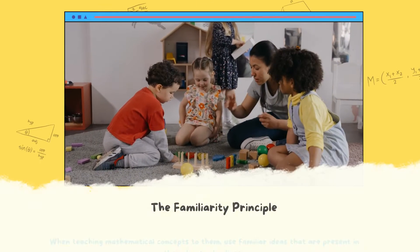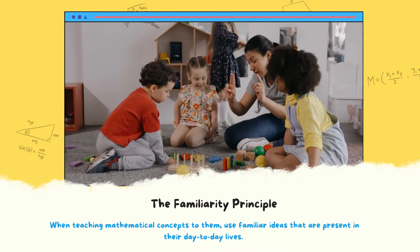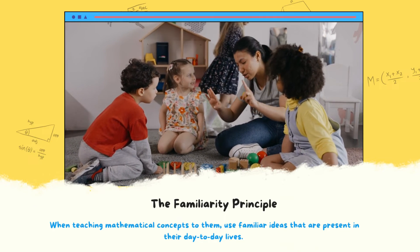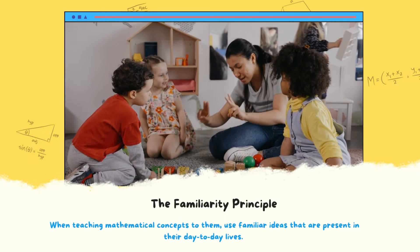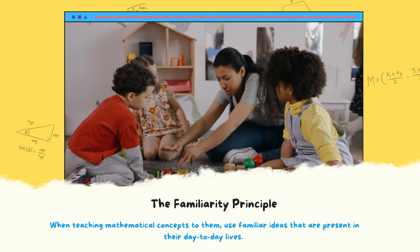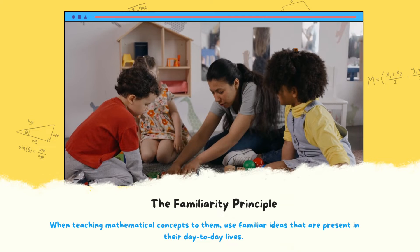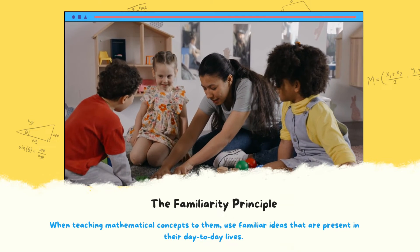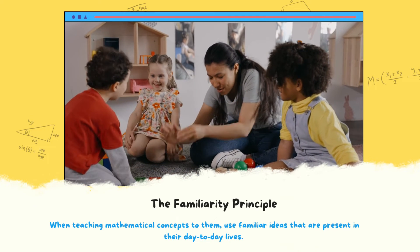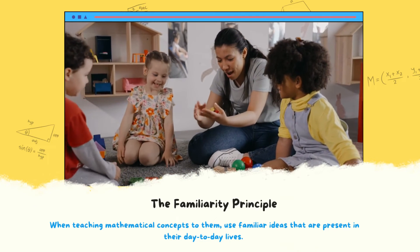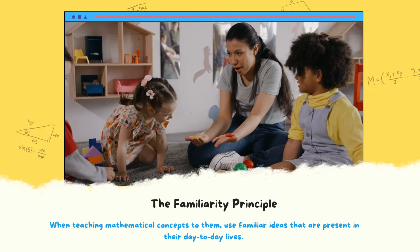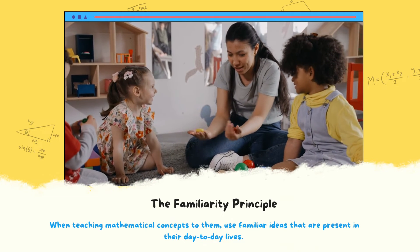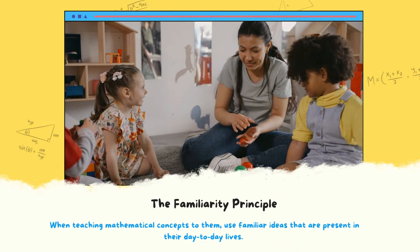The Familiarity Principle: Children with autism don't do well with sudden changes and unfamiliar environments. Familiarity is an important factor to consider in their learning process. When teaching mathematical concepts to them, use familiar ideas that are present in their day-to-day lives.